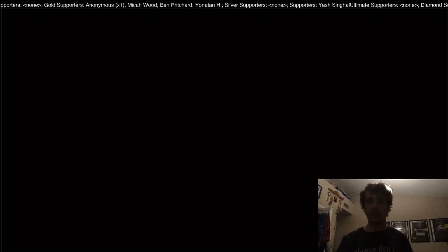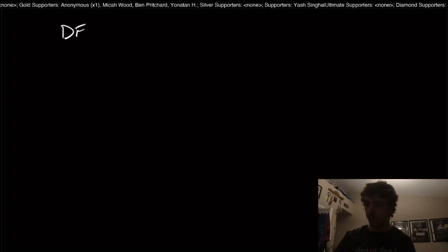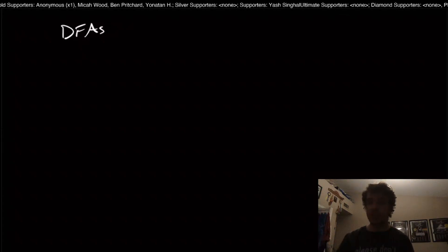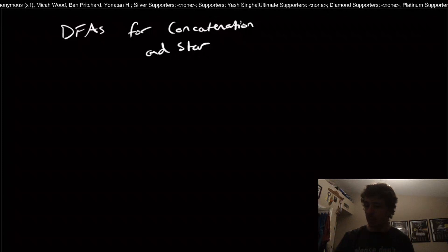Hi and welcome back to another edition of Easy Theory. We're going to continue from where we left off, talking about deterministic finite automata, and what we wanted to do was to get a DFA for concatenation and for star. Recall that the concatenation language A concatenated with B is the set of all strings WX such that W is in A and X is in B.